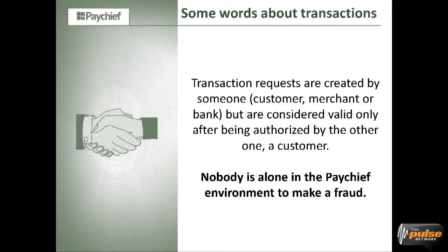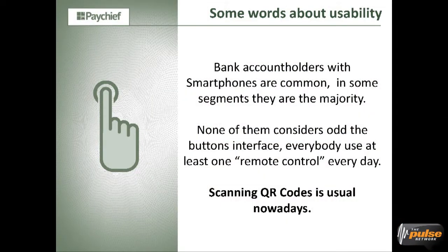Transaction requests are created by one person and approved by another — nobody is alone in the environment to make a fraud, and everybody is tracked. About usability: everybody has smartphones now, as we saw in the audience. Everybody has at least one remote control at home — nothing strange. And scanning QR codes is very common nowadays, so it's easy to use.